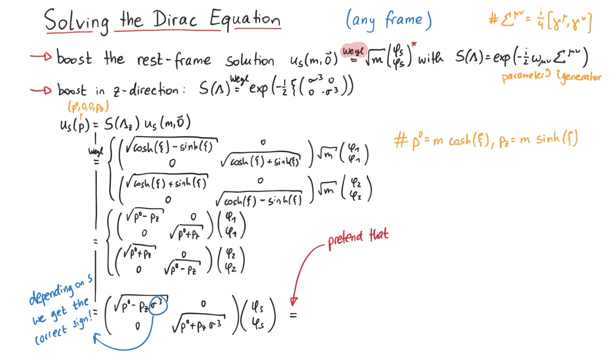Now we can pretend that we are using a general momentum and write these square roots using sigma and sigma bar, which leads us to the final result.